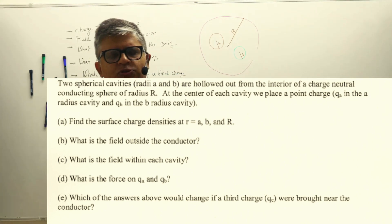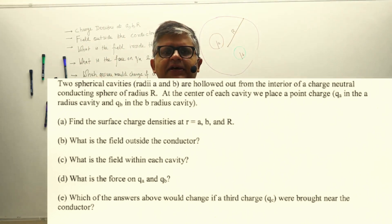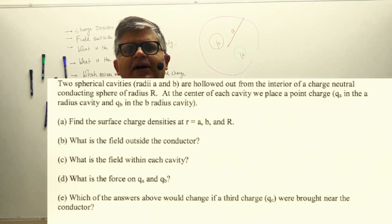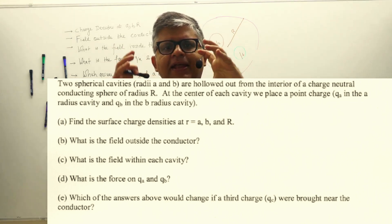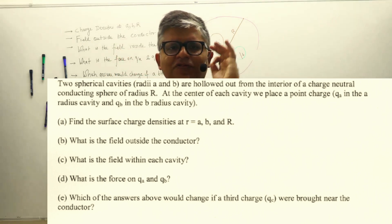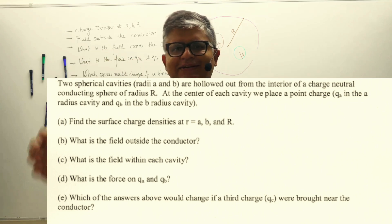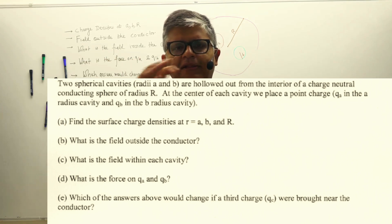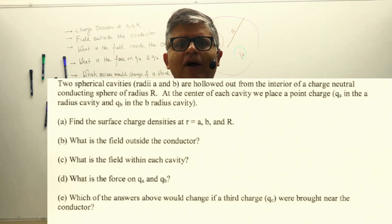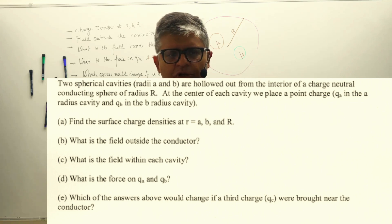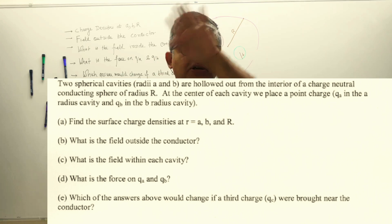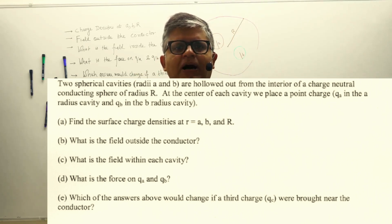What you have given is a situation of a spherical conductor in which you have two cavities carved out. The conductor is of radius R. The two cavities are A and B. You are keeping a charge at the center of cavity A and at the center of cavity B. The outside conductor which is given to you has no charge given to it.